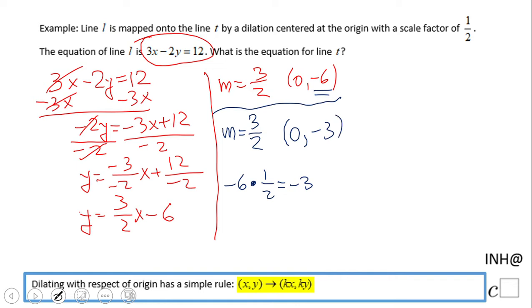So basically now we know the slope, we know the y-intercept. The equation will be y equals 3/2x minus 3. Okay, so I just multiply the y-intercept by the scale factor.